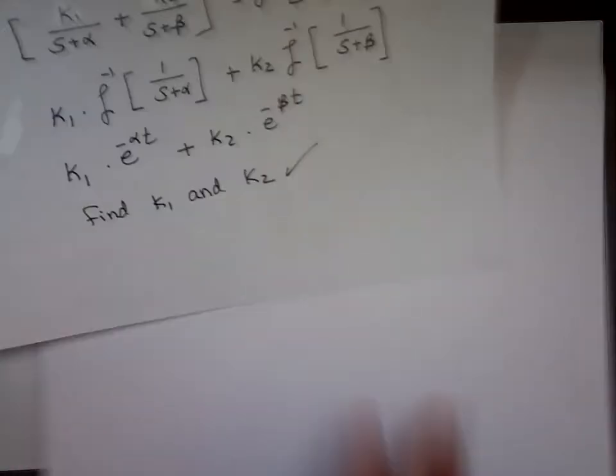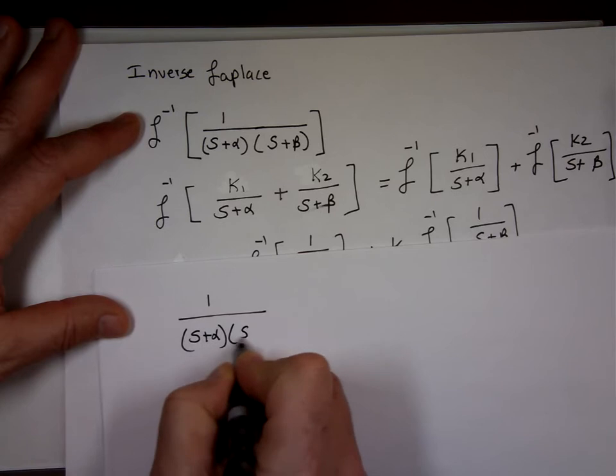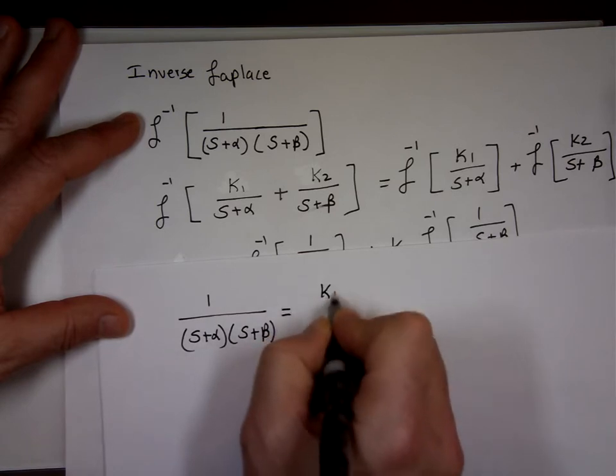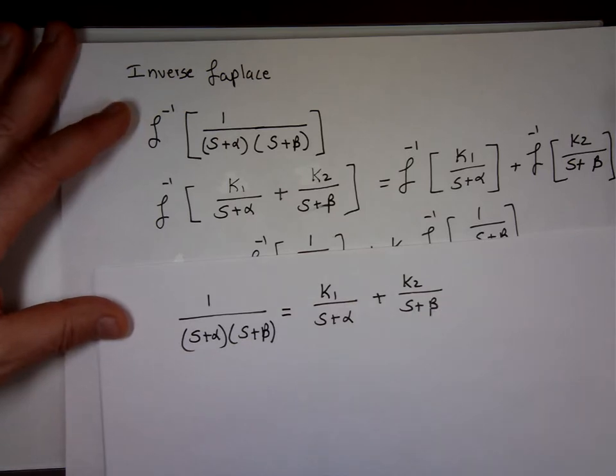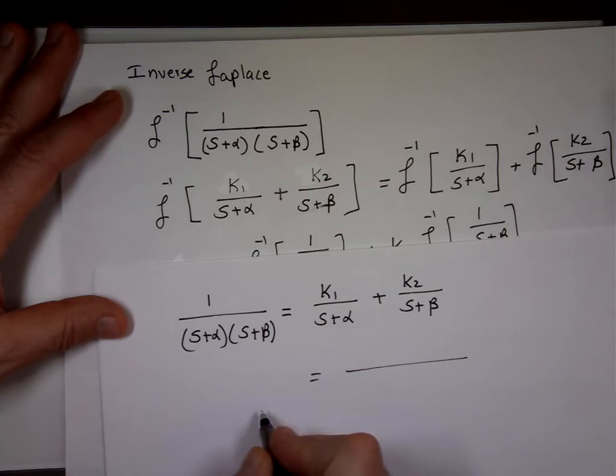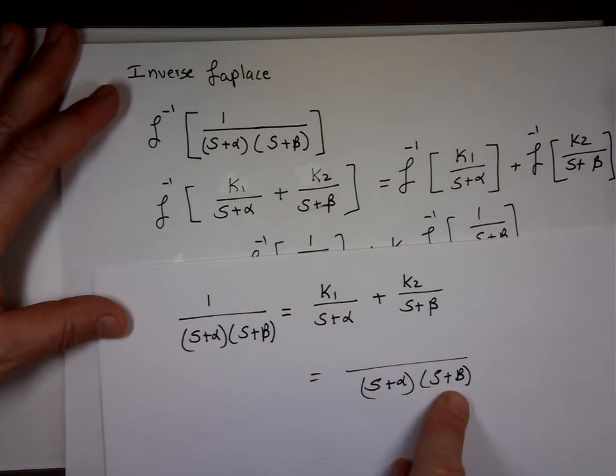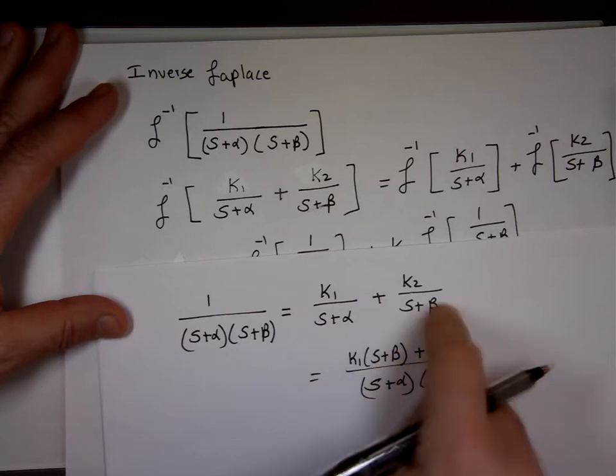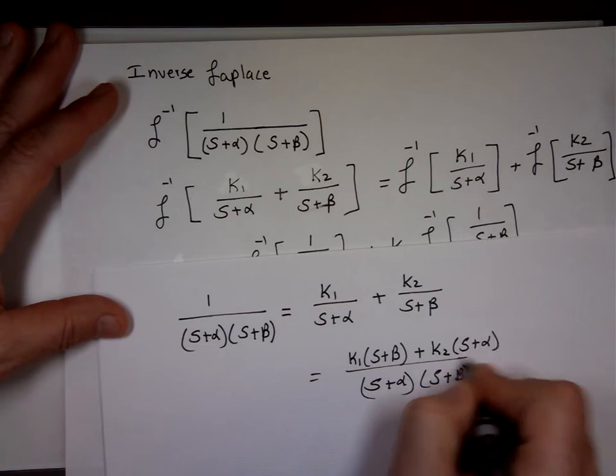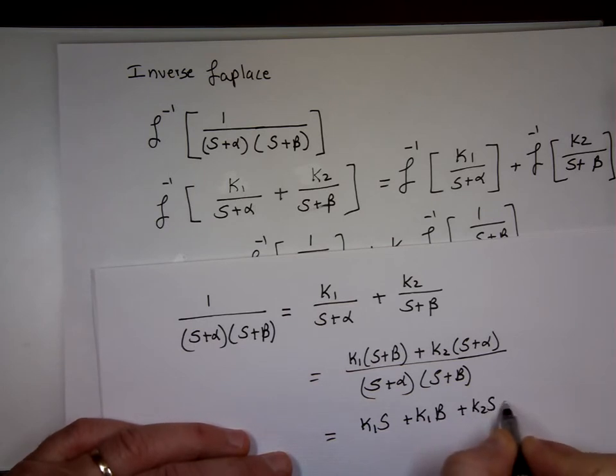Let me go on the next page and look at this. Notice, I'm claiming that this is equal to this. Is equal to K1 over S+α, plus K2 over S+β. Well, if you want to add two fractions, what do you need? Common denominator, which is (S+α)(S+β). That means I've got to multiply this by S+β. This will be K1(S+β). I've got to multiply it by S+α.